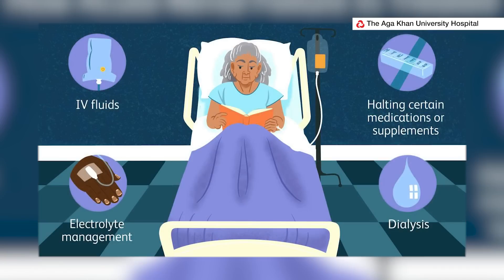We manage acute kidney injury according to the cause of the rapid reduction in kidney function. For example, if you had diarrhea and lost a lot of fluids, we replace the fluids. If you have an overwhelming infection, we administer the appropriate antibiotics to clear the disease so that kidney function can recover. And if the acute kidney injury is because of massive blood loss, we manage by replacing the blood.